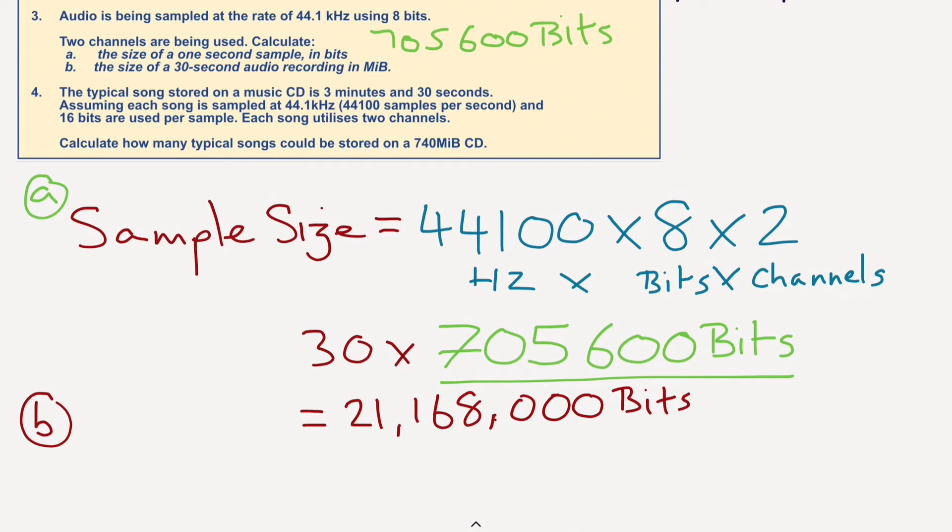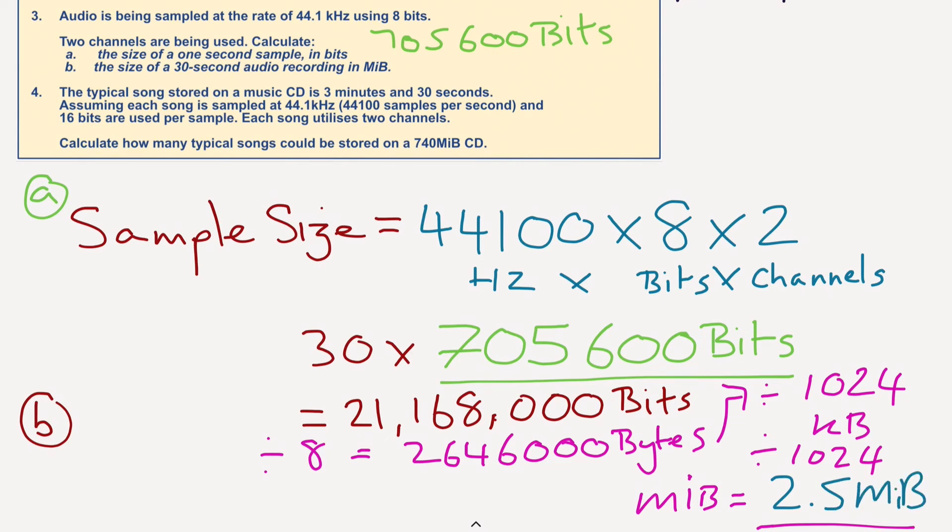So of course, as with the previous question, first we need to get it into bytes. So we're going to divide this by 8 to get a total of 2,646,000 bytes. And then we need to divide that by 1,024 to get kilobytes, and then divide again by 1,024 for us to get megabytes. So doing that, divide it by 1,024, divide again by 1,024, we should get a total of 2.5 megabytes. So 2.5 megabytes.